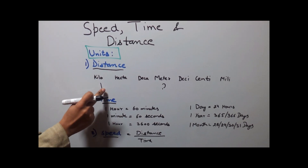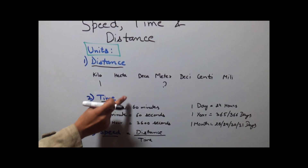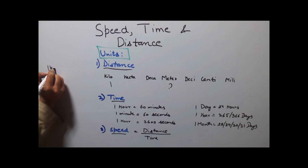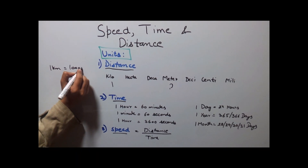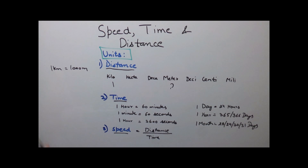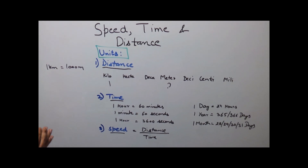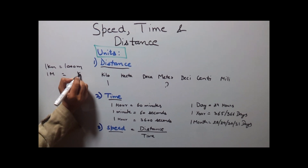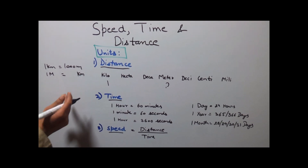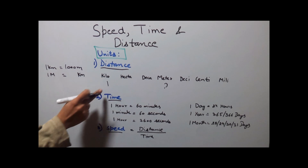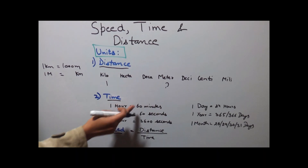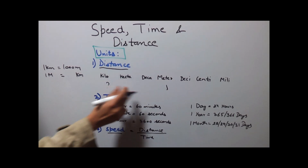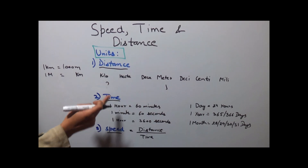To convert 1 kilometer to meters, simply multiply by 10 three times — that is 1, 2, 3 steps — so 1 kilometer equals 1000 meters. Now if you need to reverse it, that is find out how many kilometers make 1 meter, do the reverse process, which is divide by the number of tens.